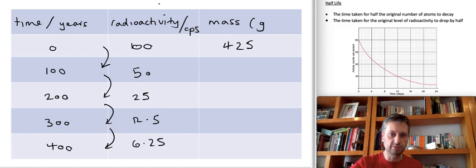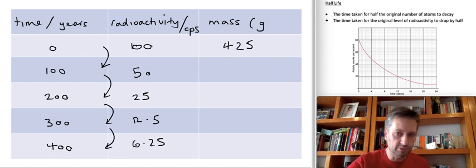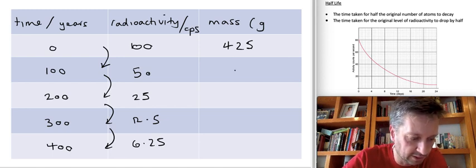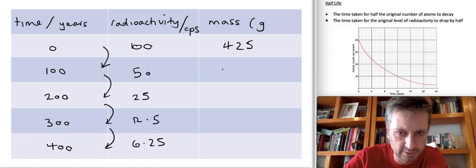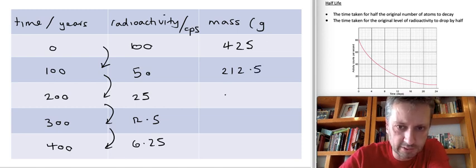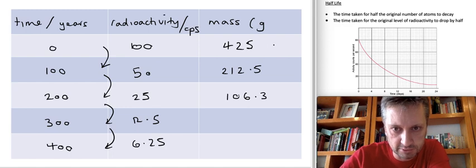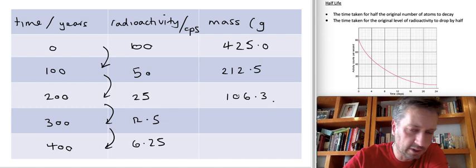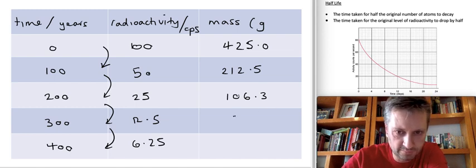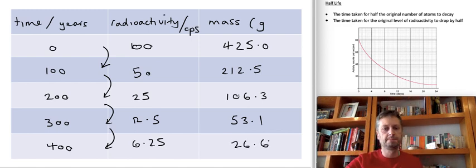So therefore, if your question asks you about the amount of radioactivity of a certain amount of years, all you need to do is take the correct number from that table. However, if the question asks you about mass, we just need to do the same thing again. If we start with 425, after one half-life, half of 425 is 212.5. When the half-life goes past, I make that 106.25. Let's just round up to one decimal place. Another half-life, half of 106.3, 53.1 grams. And after another half-life goes past half of that, 26.6.